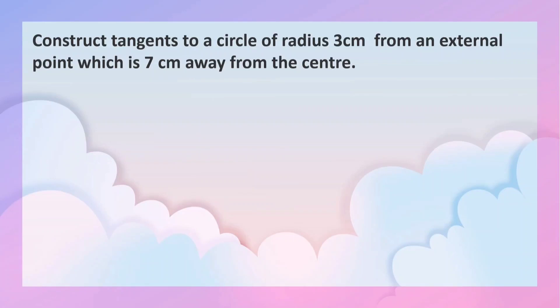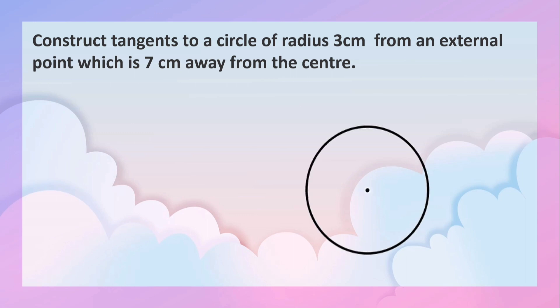Construct tangents to a circle of radius 3 cm from an external point which is 7 cm away from the center. First, let us draw a circle of radius 3 cm. This is the center O and its radius is 3 cm.